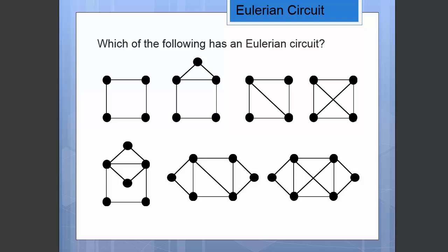Let's look at the first one. Obviously we can find an Eulerian circuit here - you just start at any vertex you like and move around this cycle. Now if you look at the next graph, yes, it does have an Eulerian circuit.